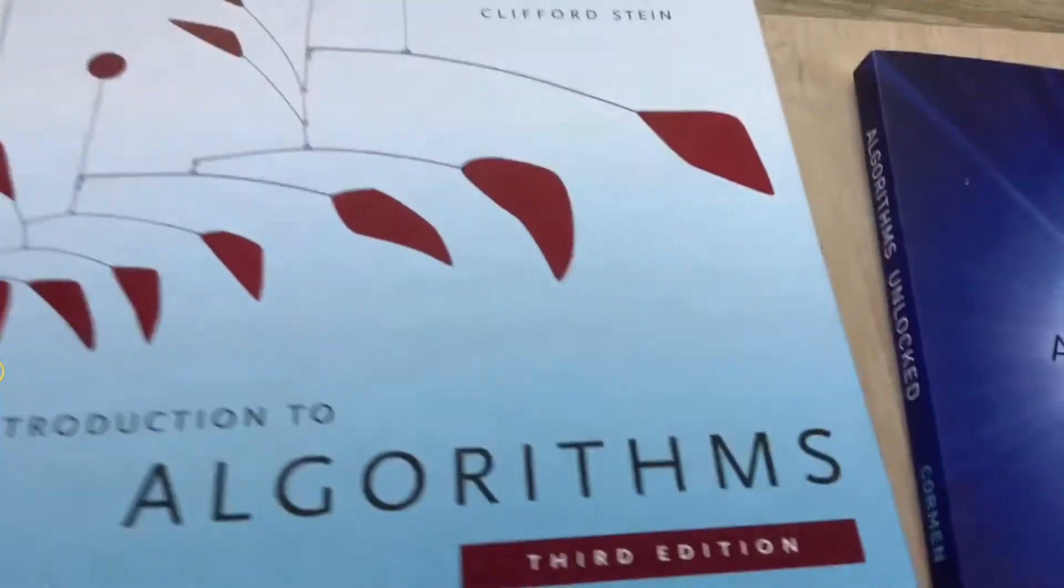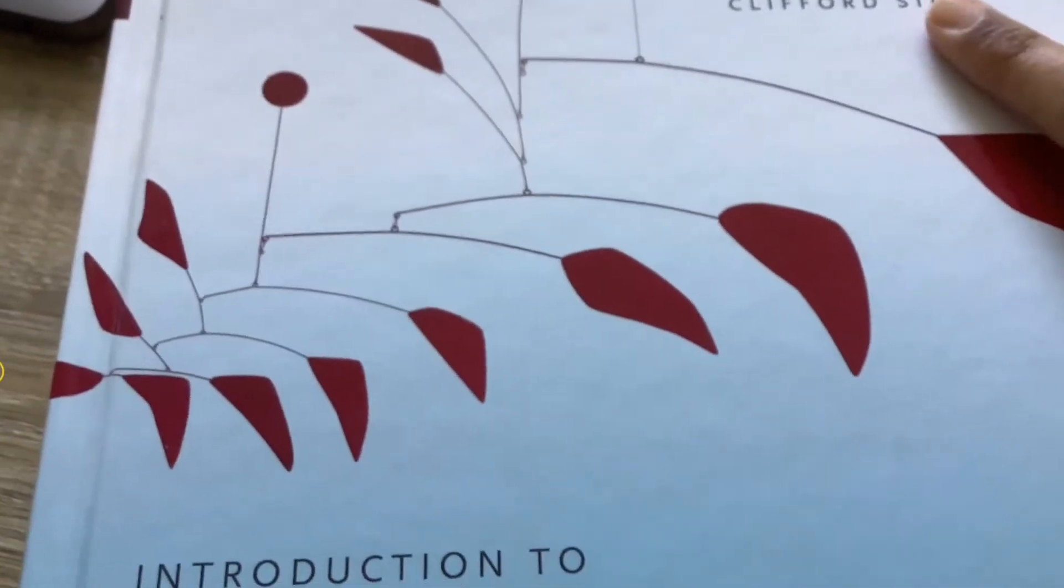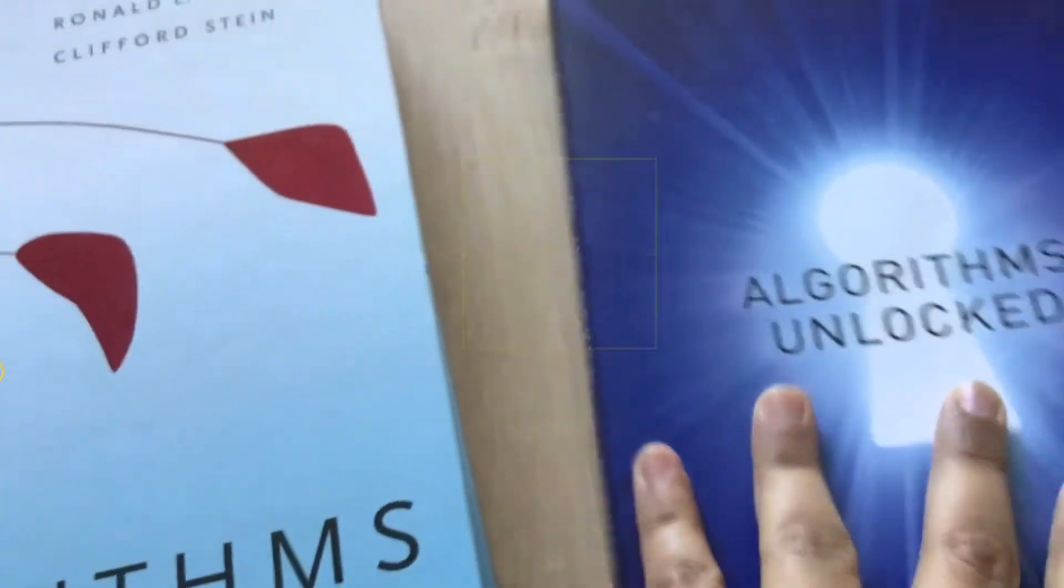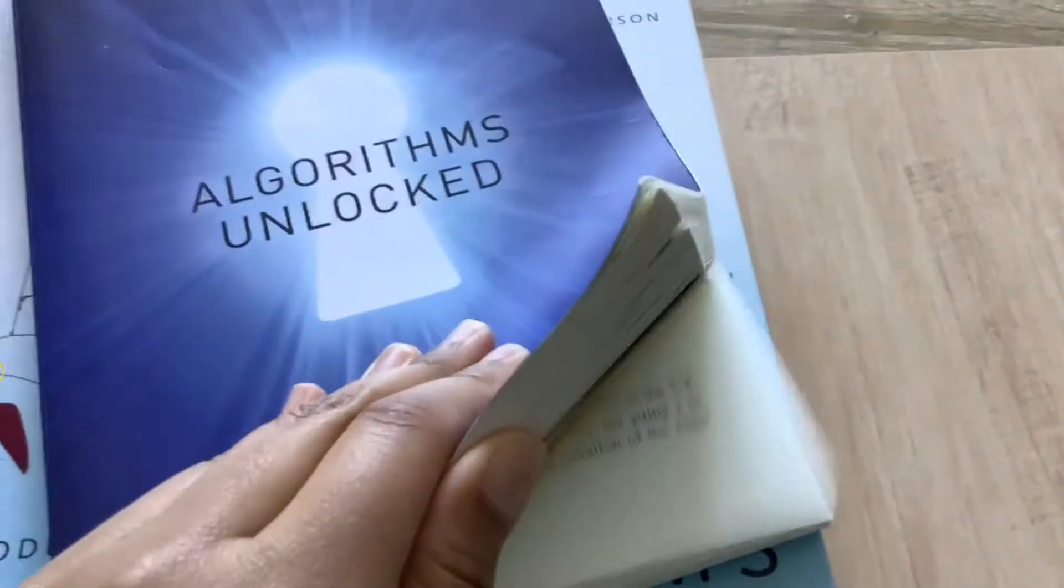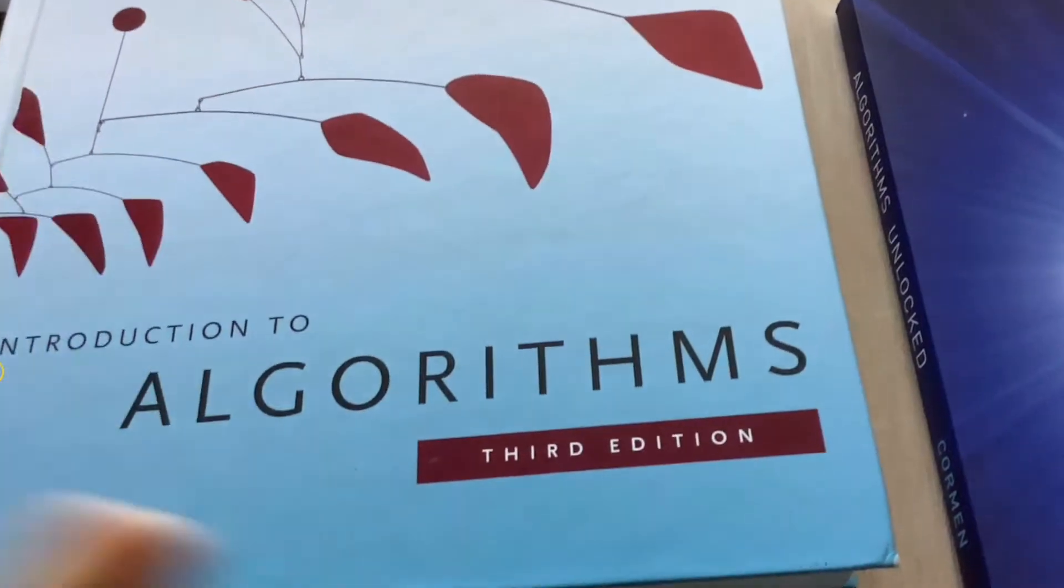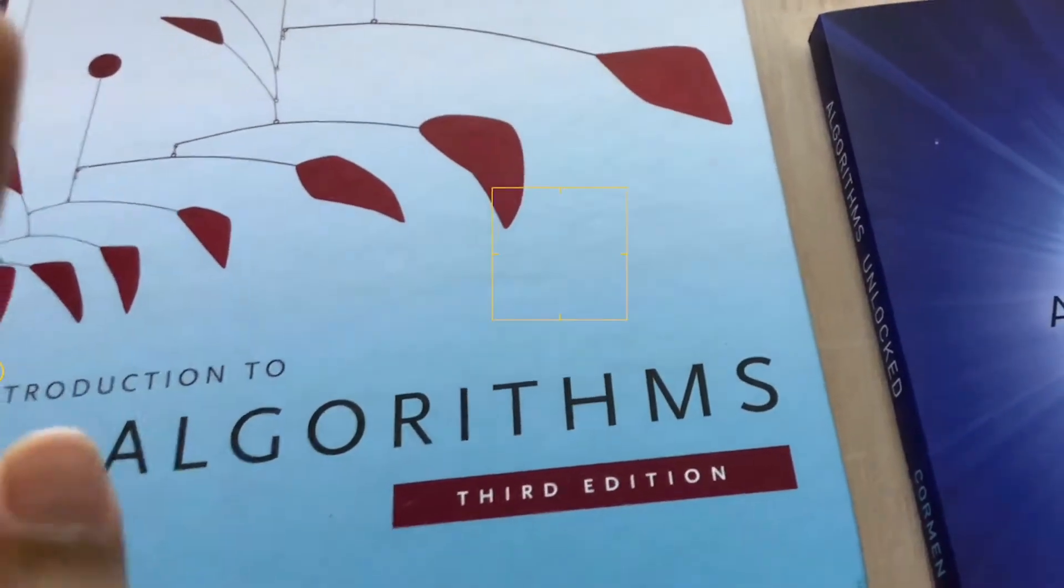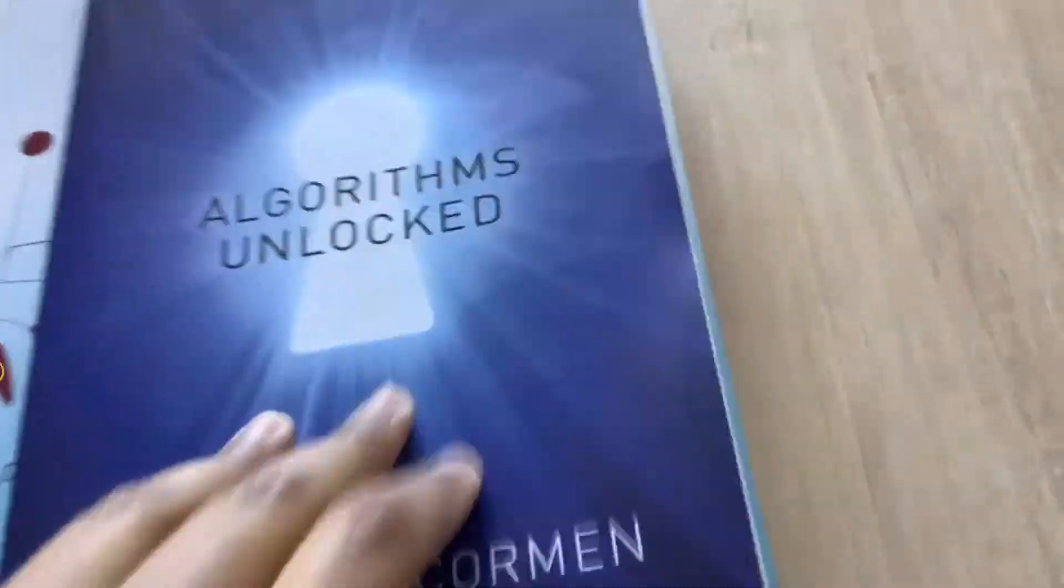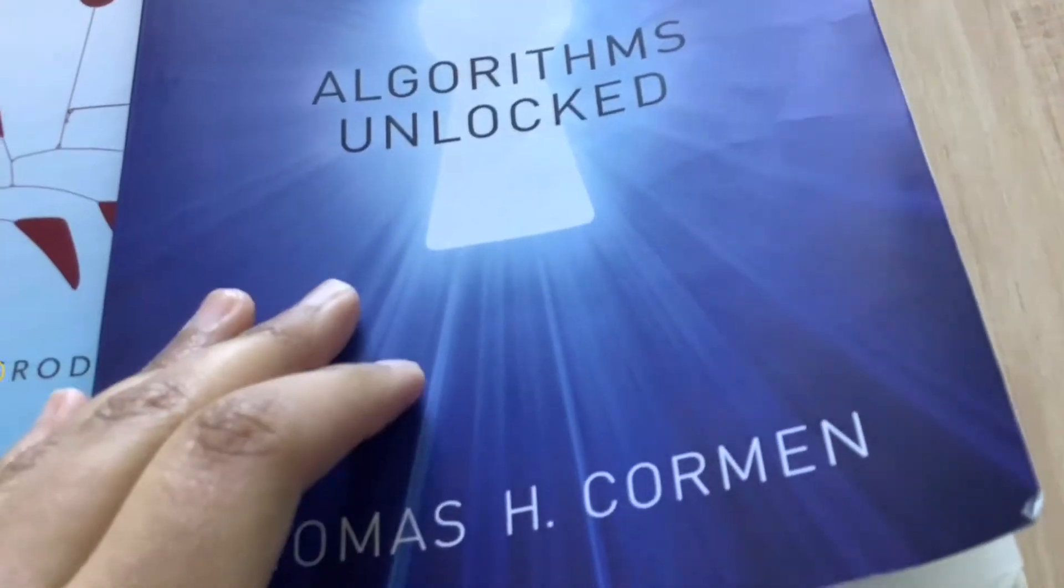So yeah, as I said, this book is written by Thomas H. Korman, who is one of the co-authors of the Introduction to Algorithms book, except this book was an attempt to write more of an introductory material, so it's around 200-something pages, so it's very short compared to Introduction to Algorithms, which is around 1,000-something pages. So this one is a lot more in-depth, but this one is more like an introductory, easier read book.